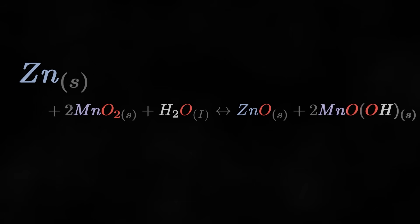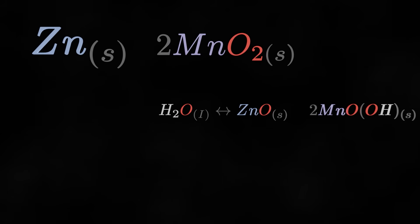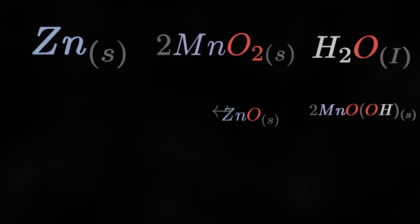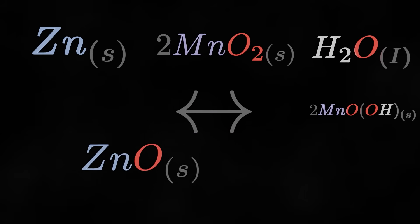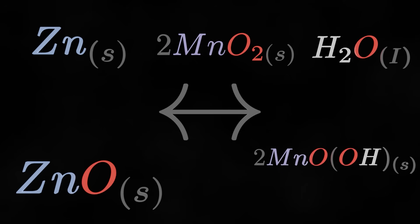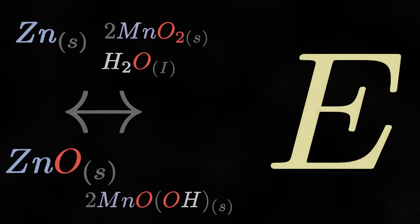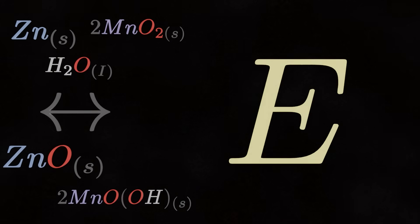Basically, we take some zinc, react it with manganese dioxide and water, and in return we get zinc oxide with two manganese oxyhydroxides. But how does that generate electricity?